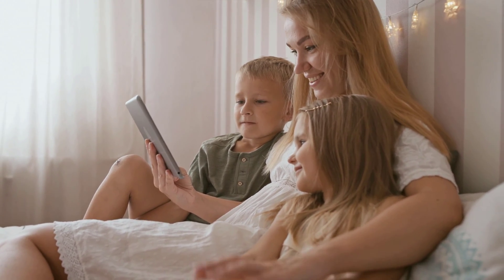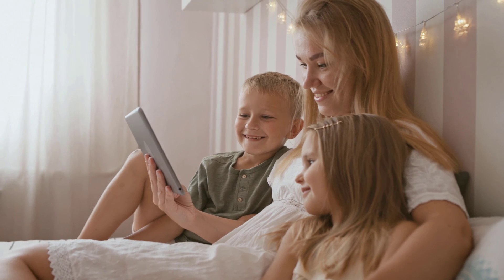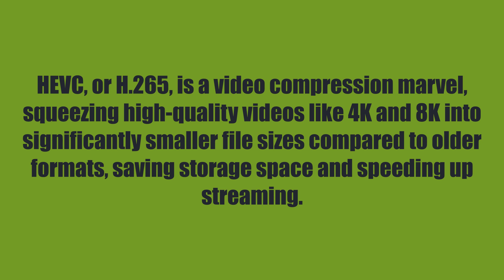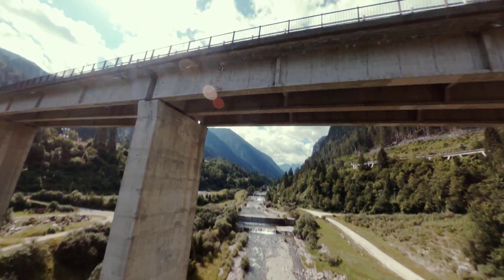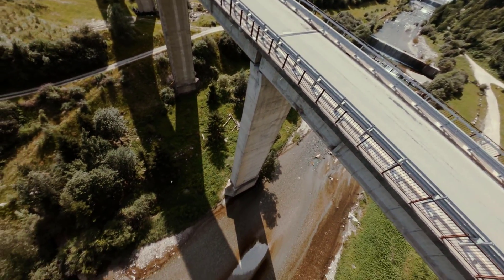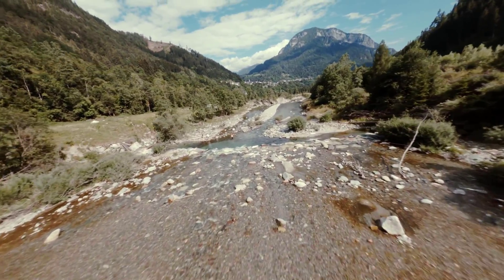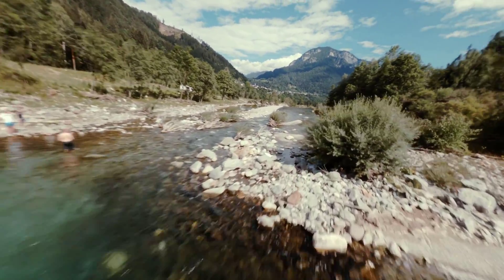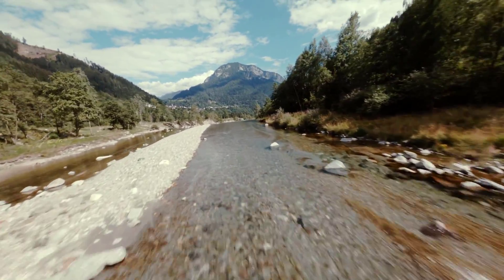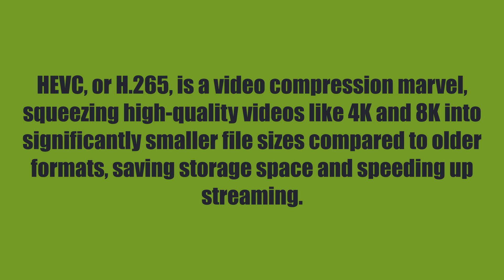This video codec was doing fine, but the problem arose when we wanted to stream high quality video like 4K or 8K on the internet or on lower-end devices. H.264 or AVC cannot do very well in these formats because the size of a 4K or 8K video gets very large — a two-hour movie in H.264 would take 20 or 30 gigabytes.